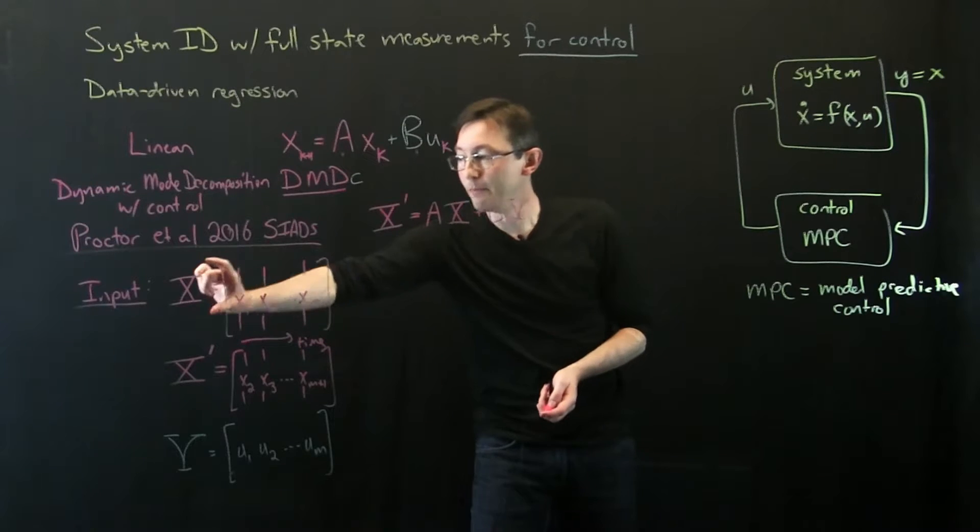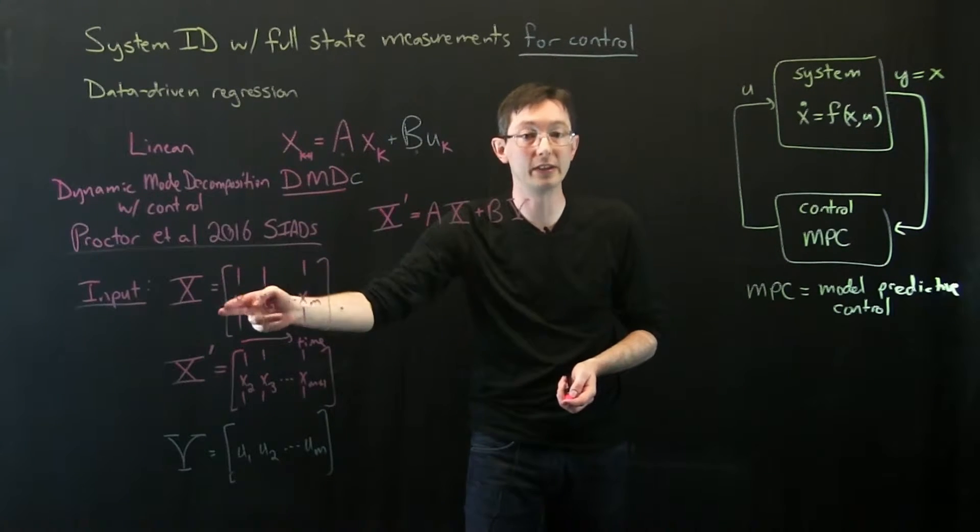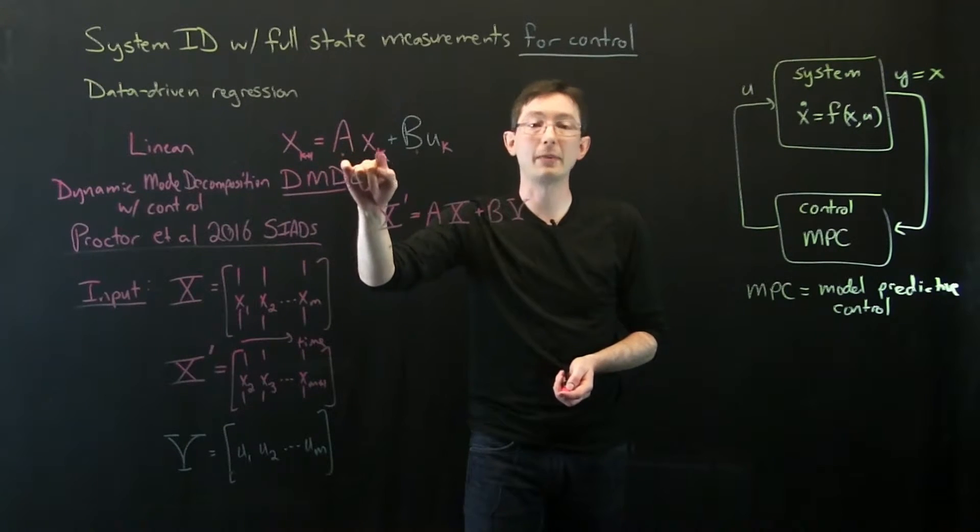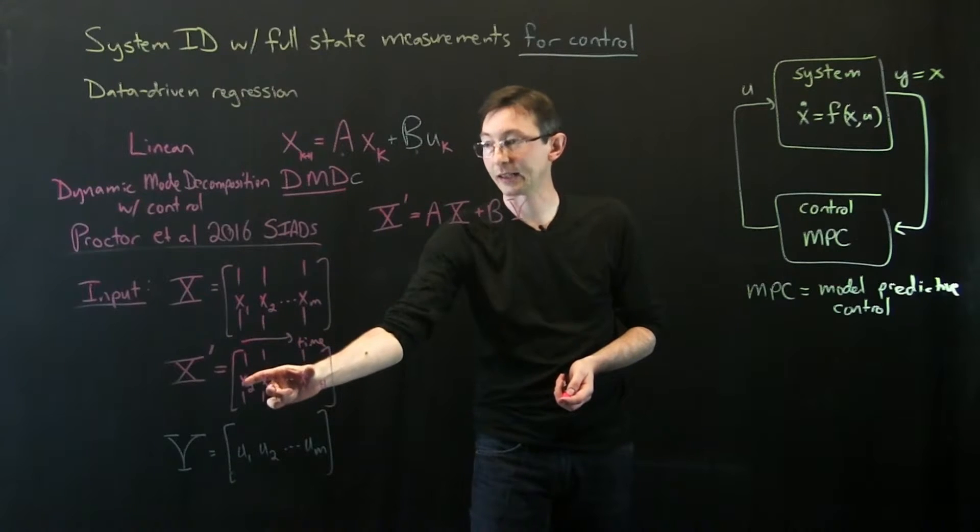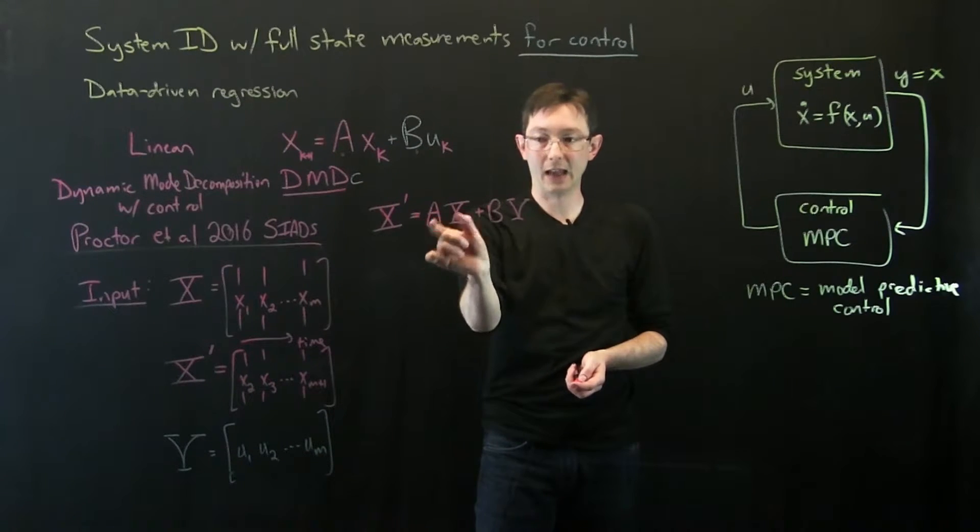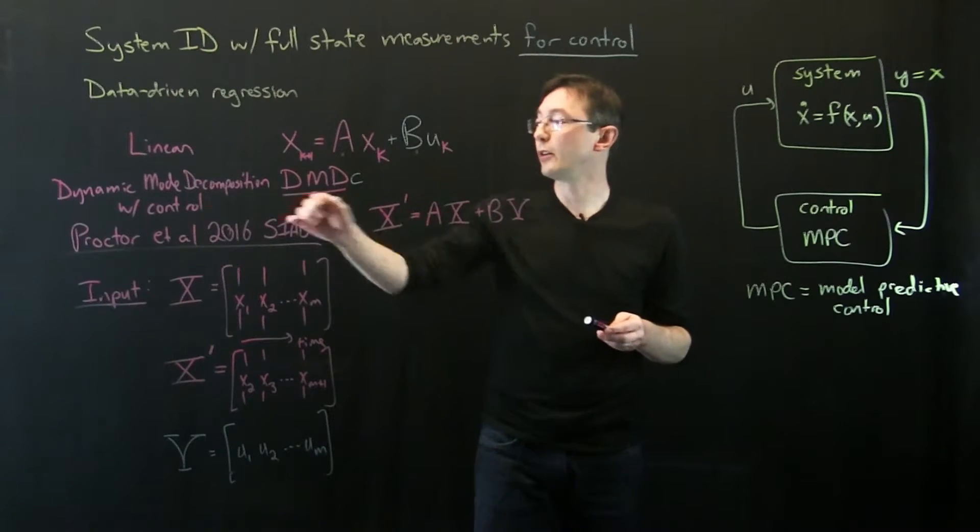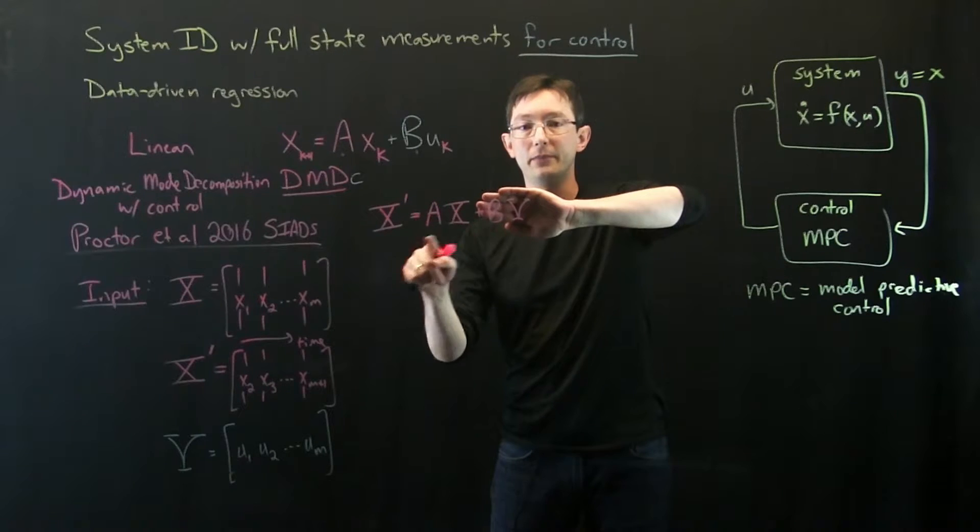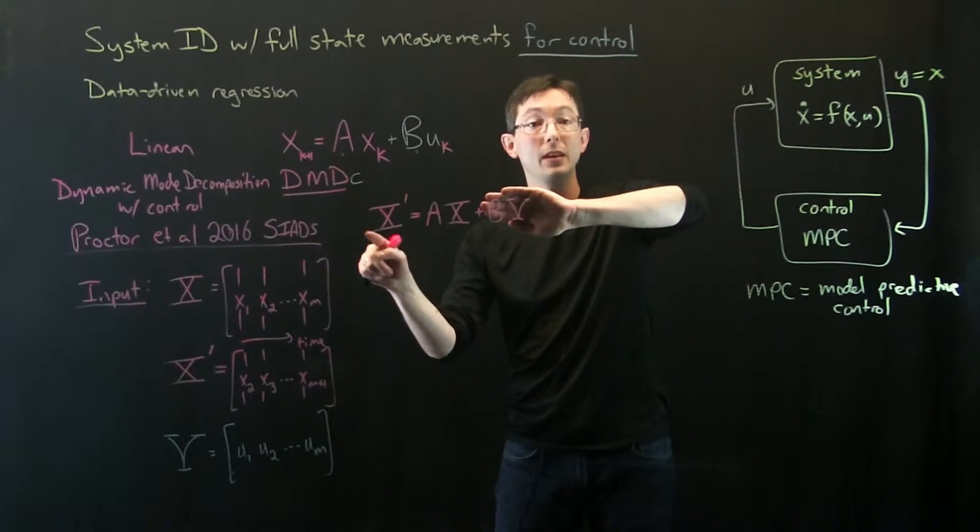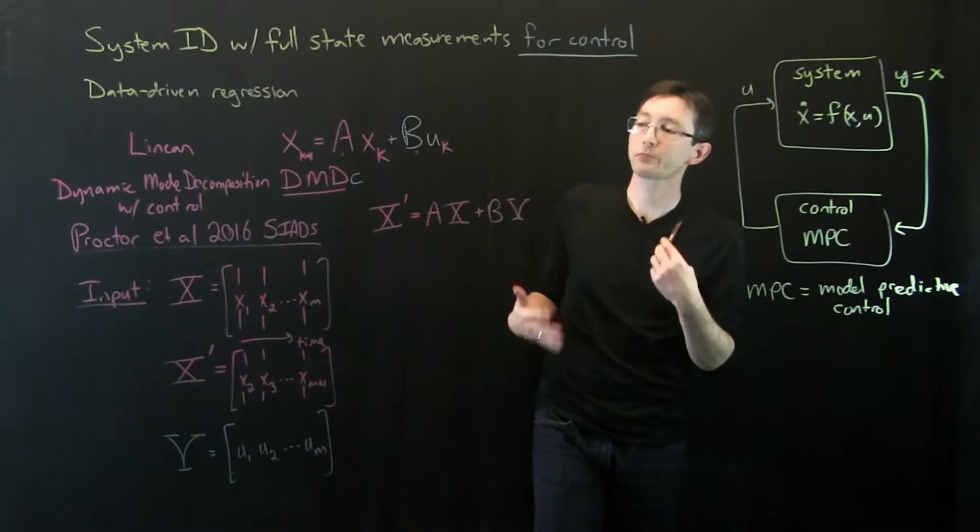I can multiply big X times my A matrix, and it essentially multiplies all of these columns. Multiplying by the A matrix advances them one delta T in the future. So I get X prime if I take A times X plus B times upsilon. And again, I'm assuming you already know how the dynamic mode decomposition works, which is essentially just if you had X prime equals AX, but now we're going to add this plus B upsilon.